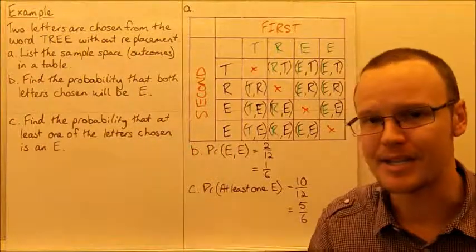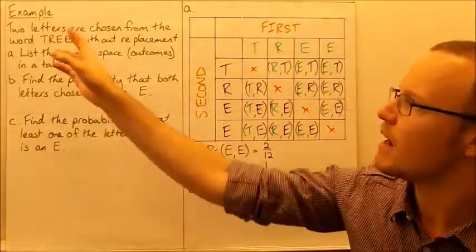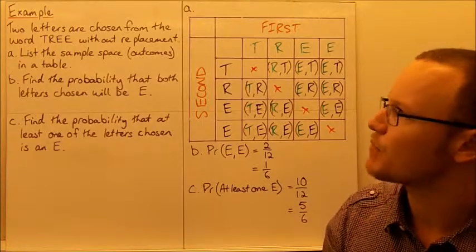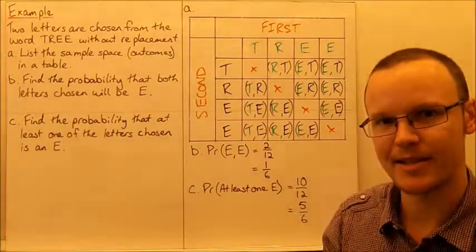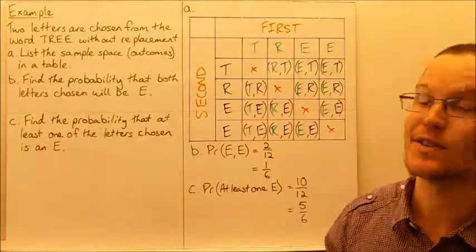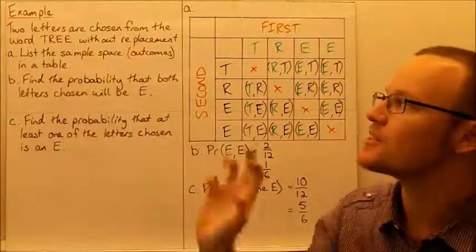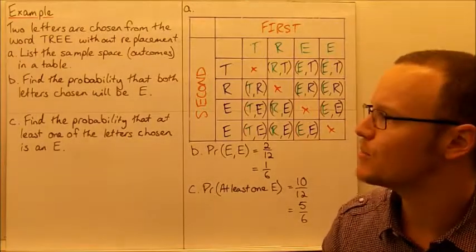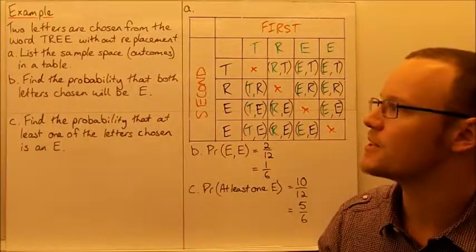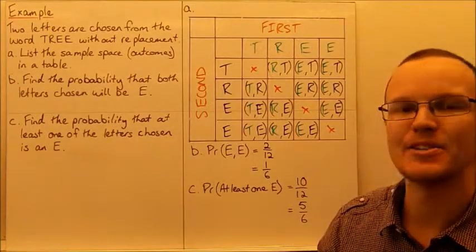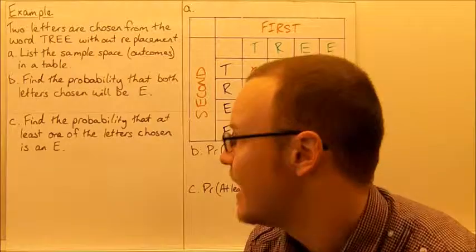Looking at an example now: two letters are chosen from the word TREE without replacement. Once a T is chosen, it cannot be chosen the second time. First, list the sample space—all of the outcomes—in a table. Then find the probability that both letters chosen will be E, and find the probability that at least one of the letters chosen will be an E.